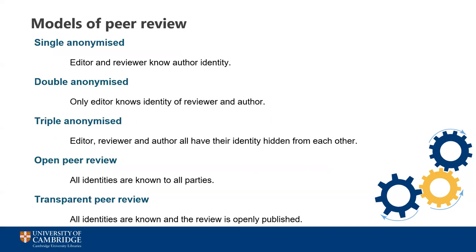There are many different models of peer review in operation, and exactly which model a journal operates will depend on the publisher. A quick word here about terminology: it's common to see terms like 'blind' or 'double blind' being used because that was the historical term, but this terminology is now outdated and we're moving more towards talking about 'anonymized' instead, though you may still see some of the old terminology.